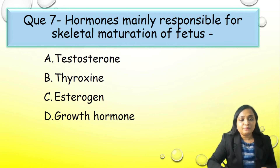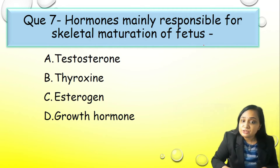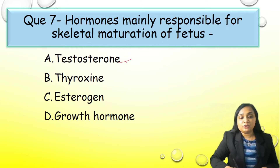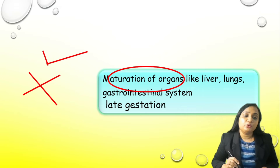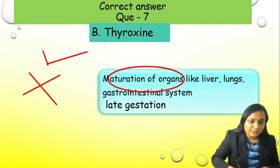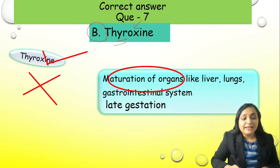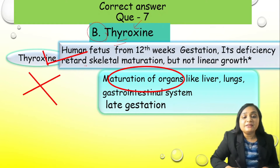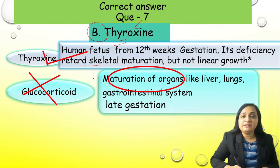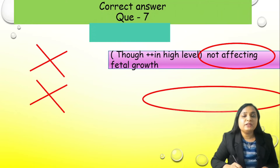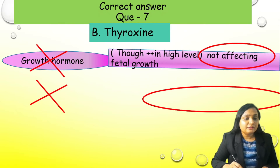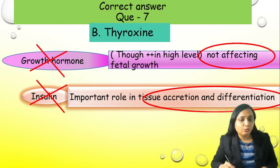Question number 7: Hormone mainly responsible for skeletal maturation of the fetus is — A) testosterone, B) thyroxine, C) estrogen, or D) growth hormone. Correct answer is option B, thyroxine. It has effect on skeletal maturation; deficiency causes retardation of skeletal maturation. Glucocorticoid, growth hormone, and insulin do not have any effect on bone or skeletal maturation.